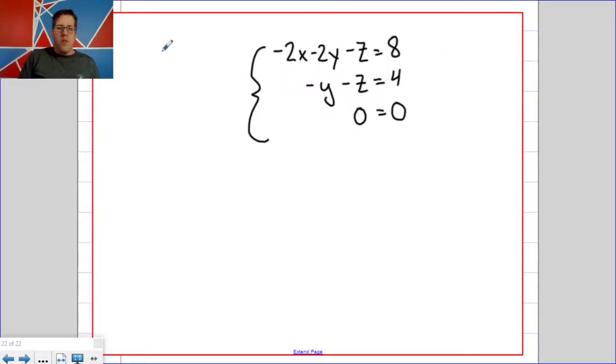So a system that has infinitely many solutions is called dependent. The reason for that is because one of the rows depends on the other two. I'll talk more about that later. So in that case, you are told to set z equal to a and then solve in terms of that.